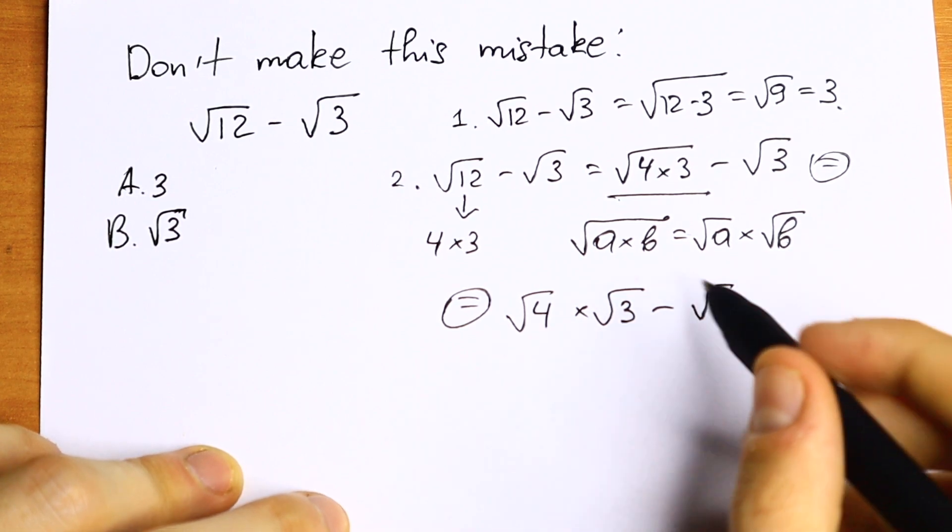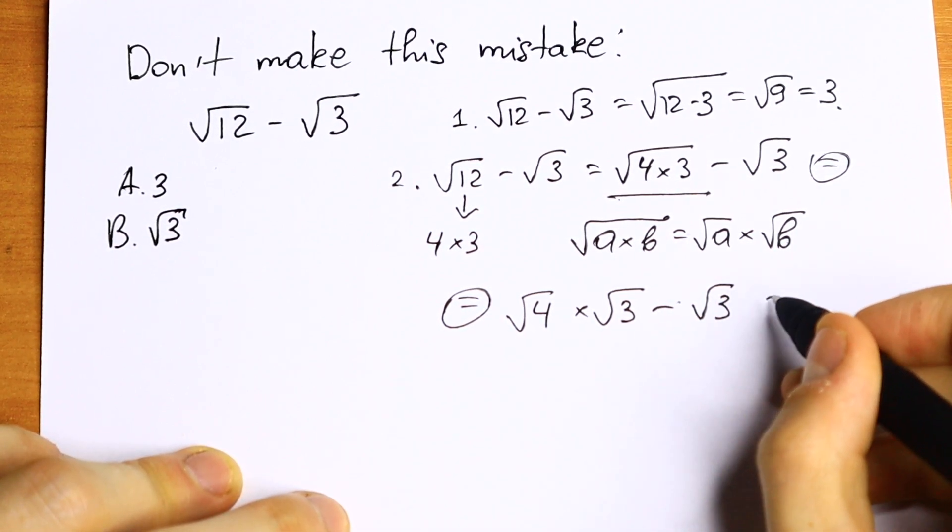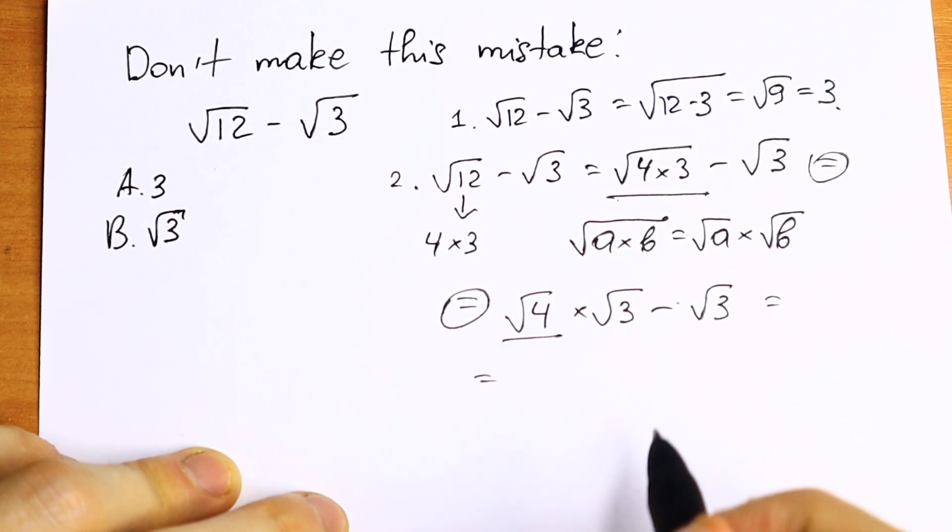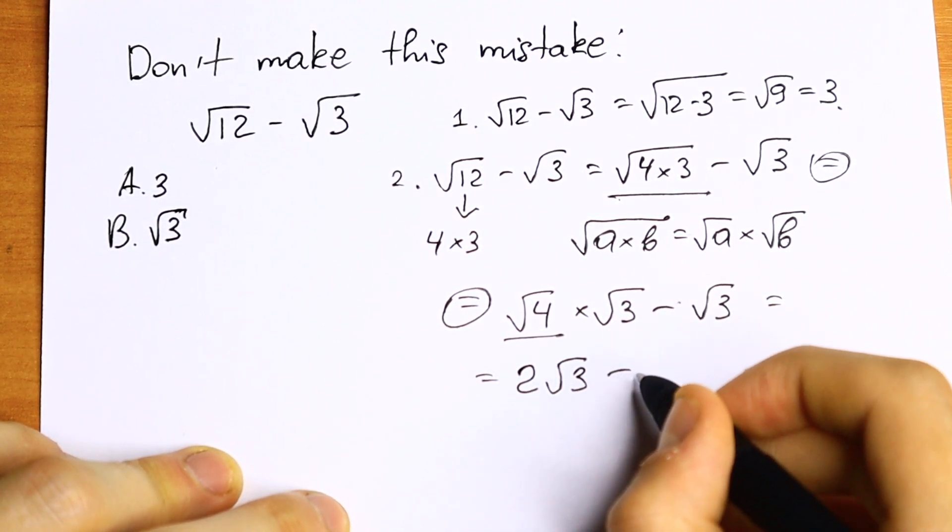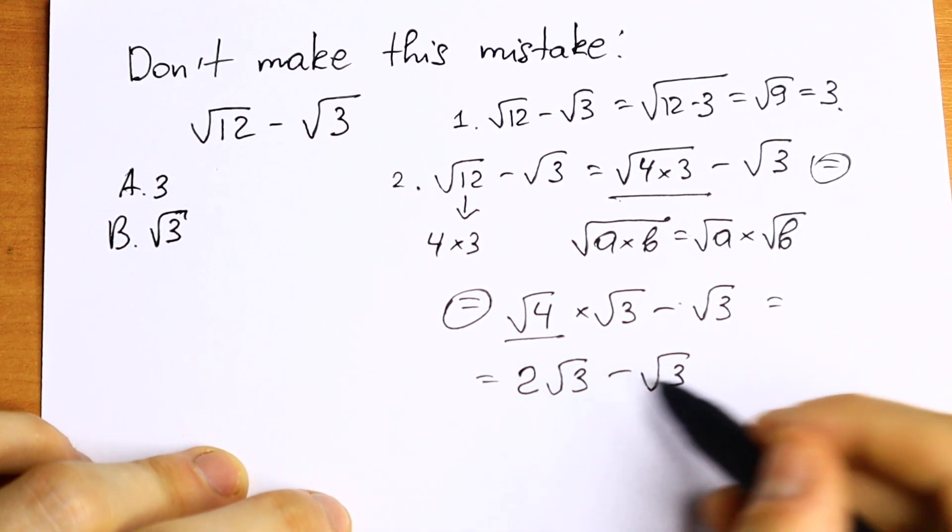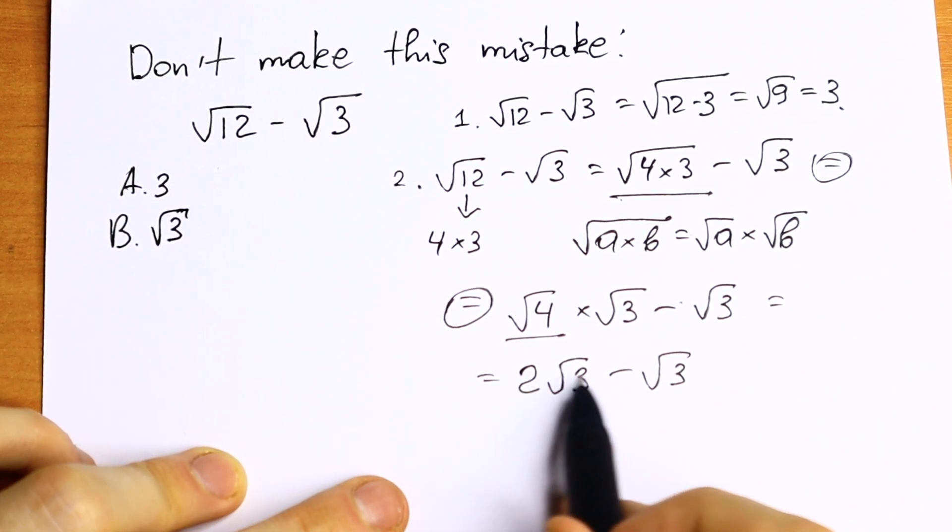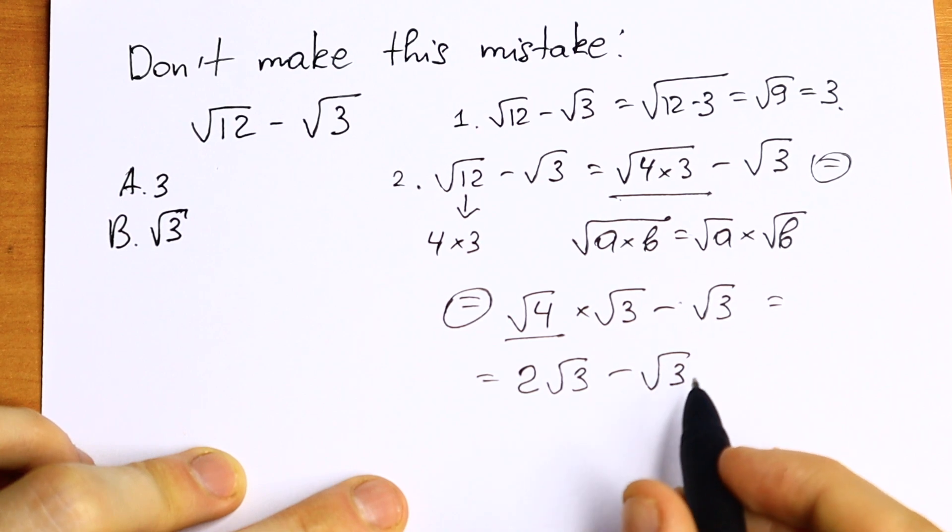We simplified this a little bit. As a result, we all know that square root of 4 equals 2, so 2 square root of 3 minus 1 square root of 3. If you subtract this, we will have 2 square root of 3 minus 1 square root of 3.